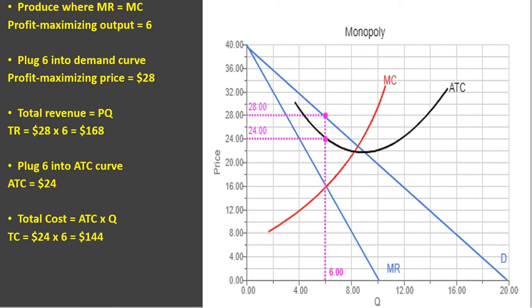The next step is to get the firm's profit. Profit is total revenue minus total cost. So $168 minus $144 leaves this firm with a profit of $24.